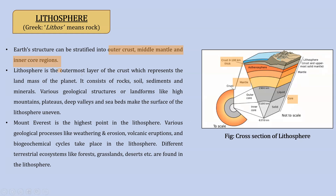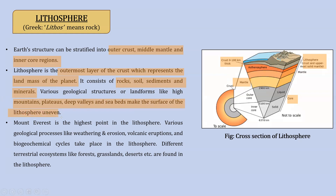Lithosphere is the outermost layer of the crust, which represents the landmass of the planet. It consists of the crust and some part of the upper mantle. Its composition includes rocks, soil, sediments, and minerals. Various geological structures or landforms like high mountains, plateaus, deep valleys, and seabeds make the surface of the lithosphere uneven.